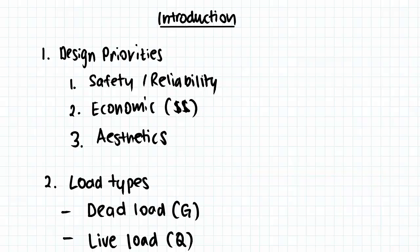There are three major priorities that design engineers are striving to achieve. The first one is safety and reliability — we want to design structures that have enough capacity to support the loads expected during its lifetime. The second priority is economic: we want buildings to be affordable to build and maintain, so we want a design that isn't over-designed but still affordable.